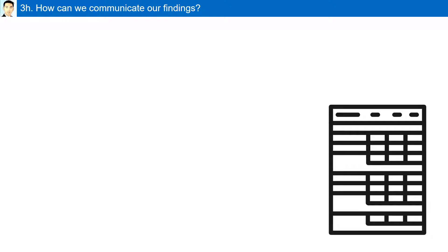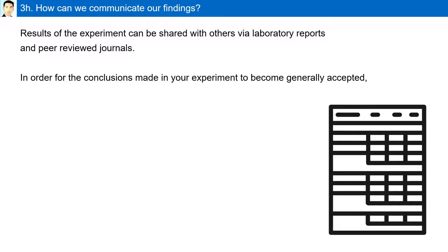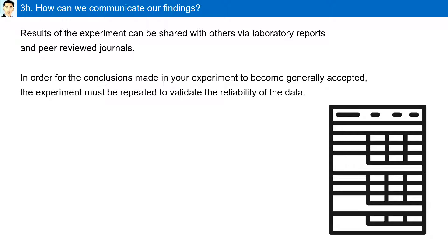How can we communicate our findings? The results of the experiment can be shared with others via laboratory reports and peer-reviewed journals. In order for the conclusions made in the experiment to be generally accepted, the experiment must be repeated to validate the reliability of the data.